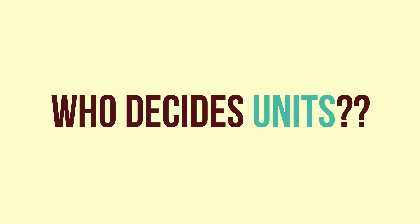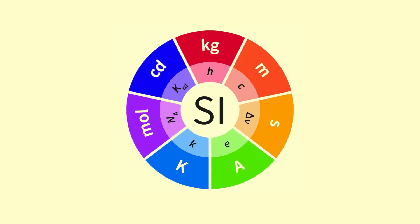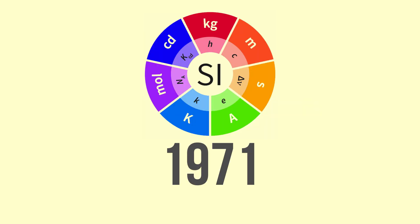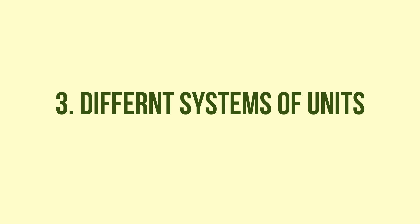To put it simply, derived quantities are like different dishes created from a combination of few ingredients called fundamental quantities. There is a body named CGPM which has been given authority to decide units by international agreement. The system of units currently used is called SI units — SI is short for Système International, or in English, the International System of Units. This system came into existence in 1971.